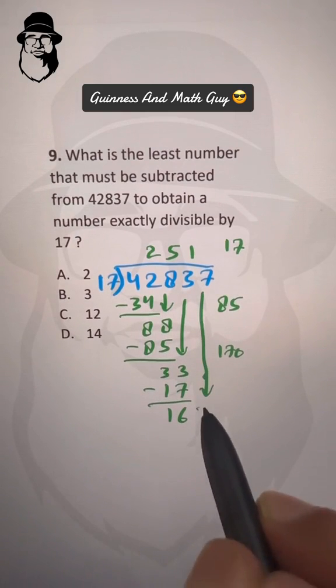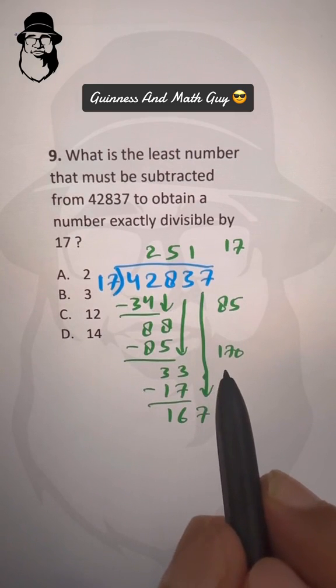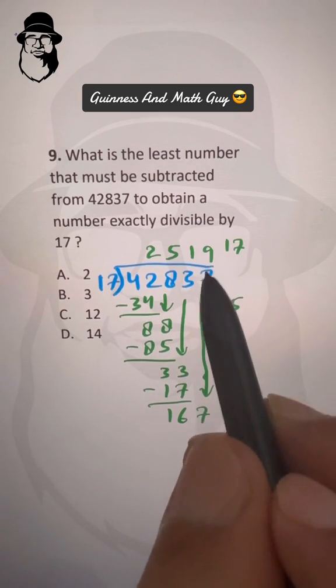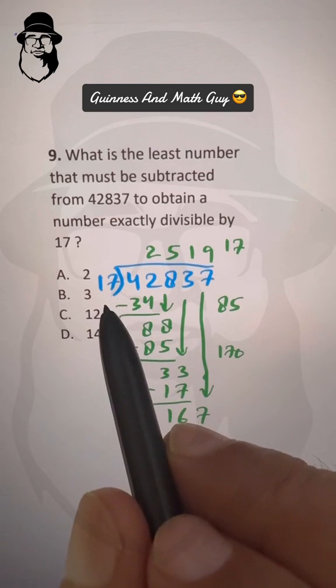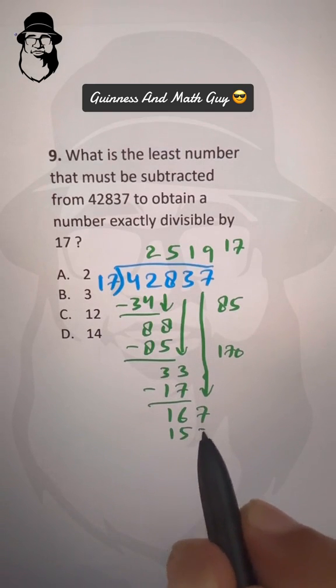Bring down this 7 to make it 167. Now 167 is close to 170, that is 17 times 10 is 170. So 17 times 9 will do: 9 times 10 is 90 and 9 times 7 is 63. 90 and 63 is 153. And we have 14 remainder.